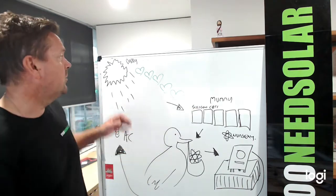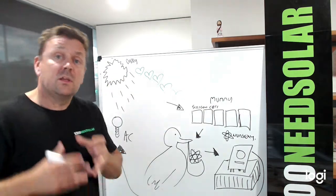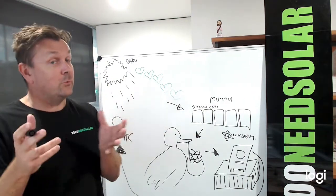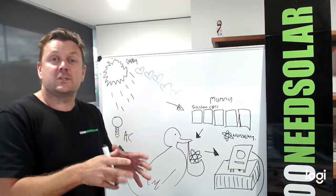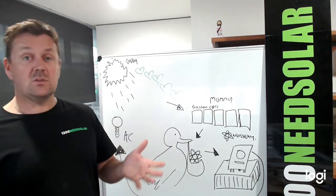Well, kind of. Basically, the solar cell gets excited by the sun's rays, don't we all, and then it produces DC power and inverter changes that to AC power and the house uses AC power.